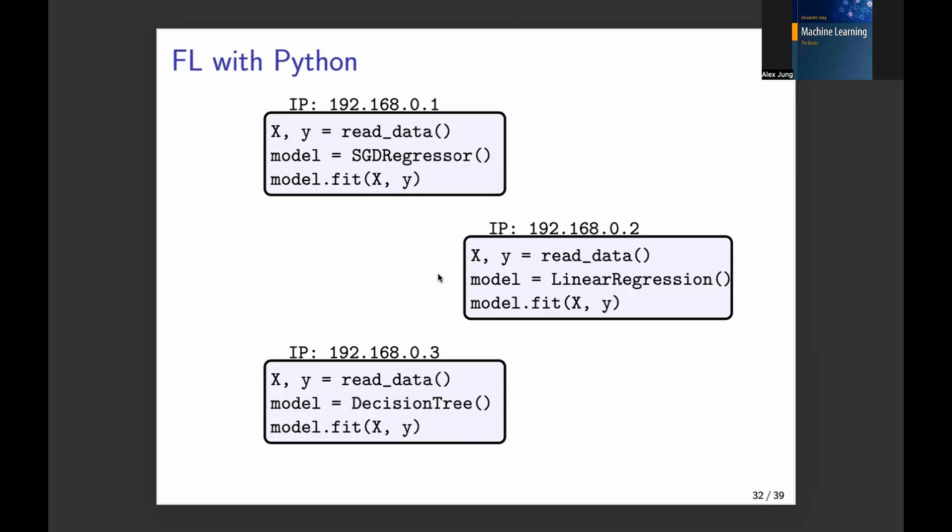And now, from machine learning, we go to federated learning with Python by just having several instances of this workflow. So you have one of these Python code snippets running on different machines. Each machine here is indicated by a different IP address. And so how do they collaborate? Well, they can collaborate via this read data function. So in this read data function, and this you will see later in the course how to implement this, this read data function could be, for example,